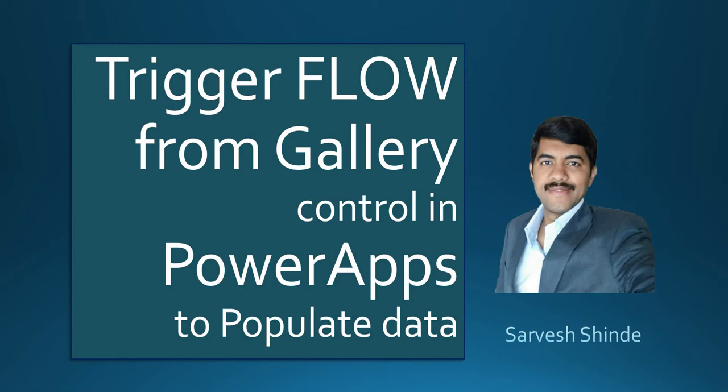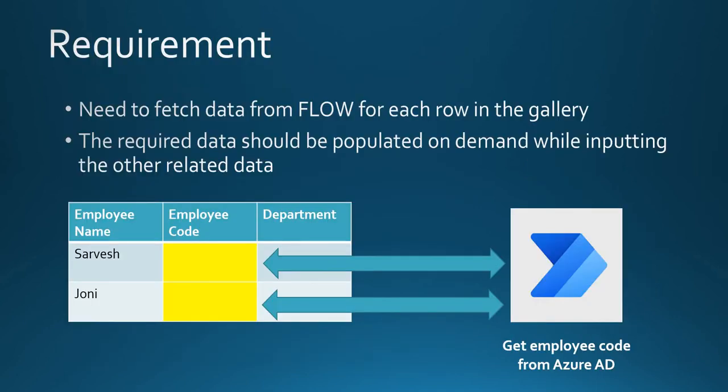We'll see what problems we might face and how we are going to tackle them. Let's understand the requirement quickly. You have a form and a gallery control in it where you want to add multiple records. You have a business requirement where you need to get data from a source, but a direct connector is not available in PowerApps, so you have to make a call to a flow and the flow will get the data from that particular application or data source.